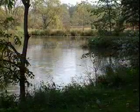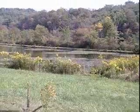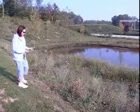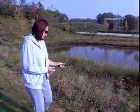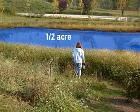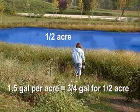It is imperative that you carefully calculate these pond parameters to ensure that you apply the proper amount of herbicide. Using a GPS device, this pond owner determined that her pond is about one-half acre in size. Since Diquat Dibromide has a recommended dosage of about 1.5 gallons per acre, we will need about three-fourths of a gallon for this treatment.